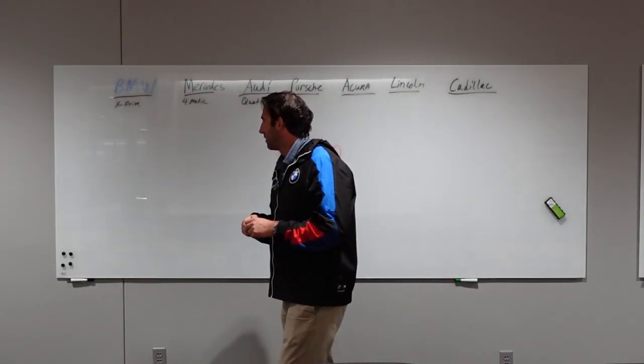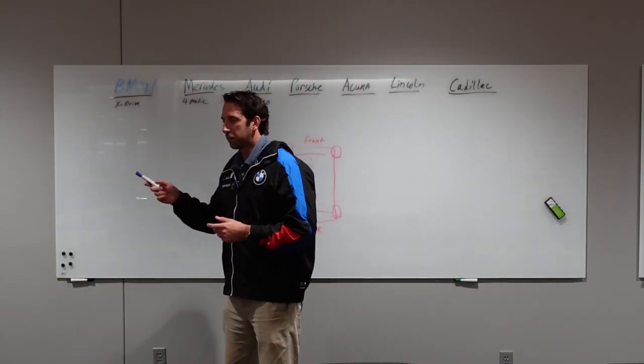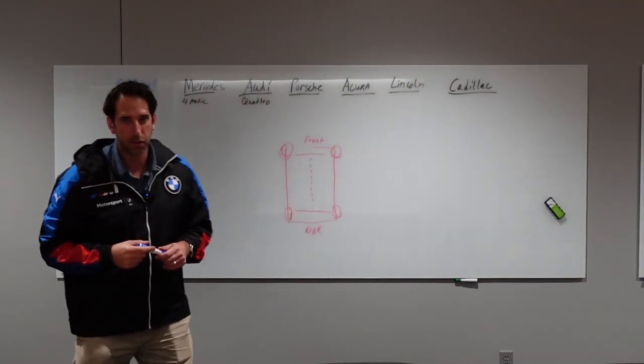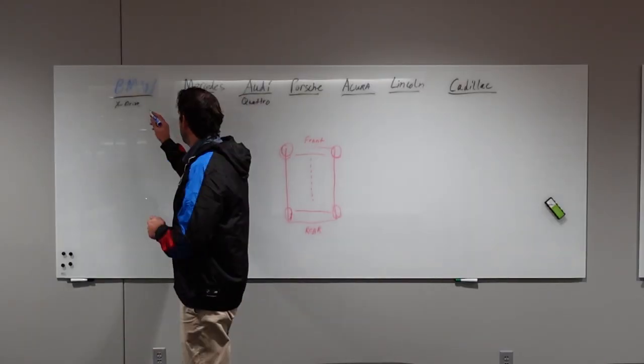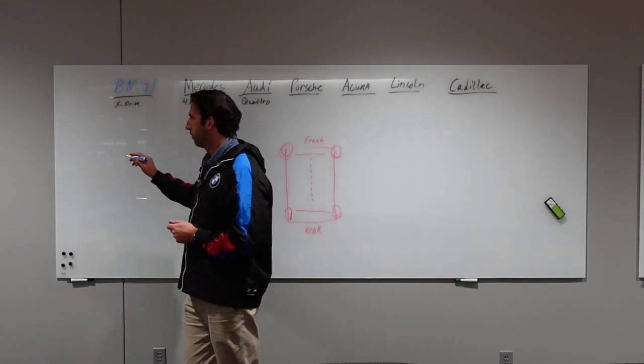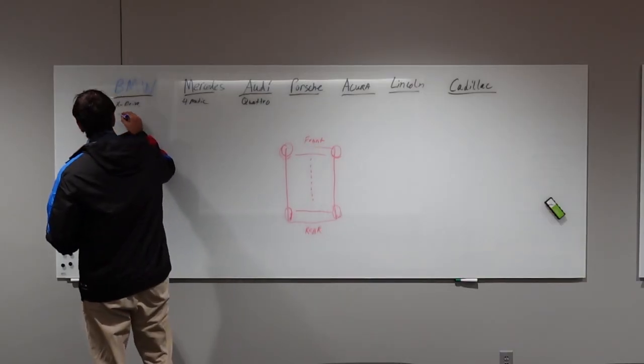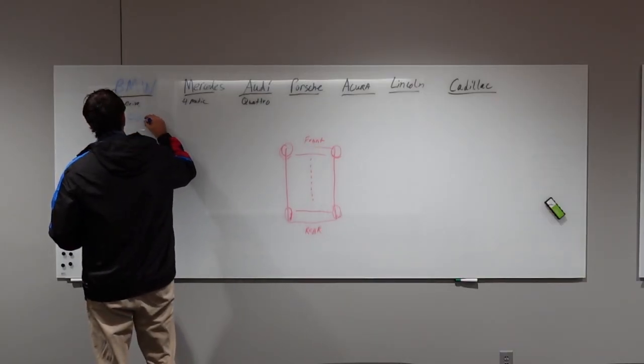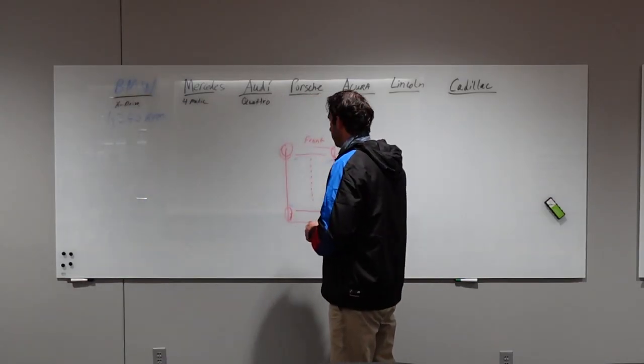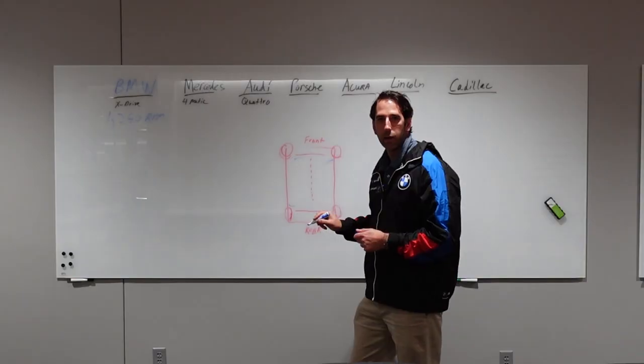All right, so let's break down the different brands here. We're going to start with the German brands and then work our way up to some of the domestic brands as well. BMW's all-wheel drive system is known as the xDrive and this will start vectoring torque at 1250 rpm. That's when it's going to start moving different amounts of power to different wheels right here.